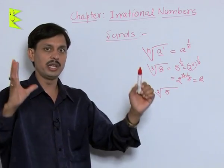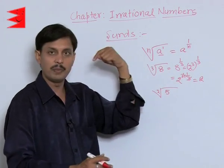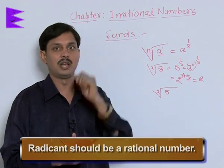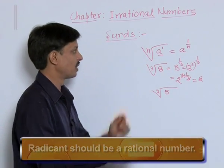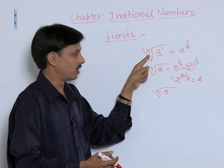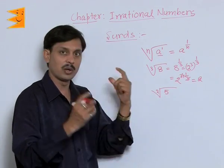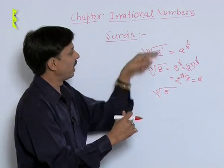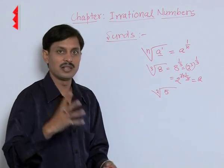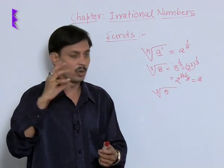The property for an expression of the form nth root of a to be a SIRd: radicand must be a rational number. First property. This is radicand. The order, the order of SIRd must be a natural number greater than or equal to 2. And the net answer, the final answer must be an irrational number. Then that is known as a SIRd.